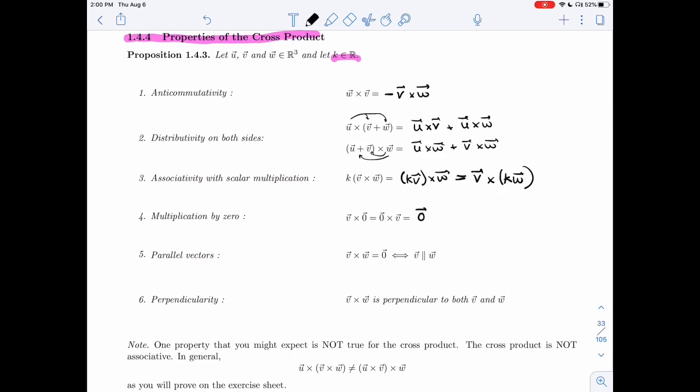Parallel vectors, if v is parallel to w, then the cross product is zero, and vice versa. That's what we just saw in the last corollary.